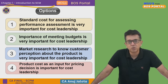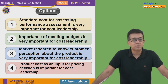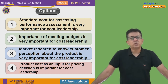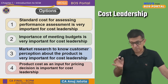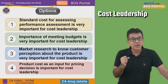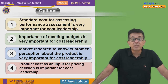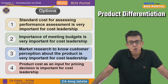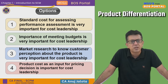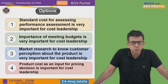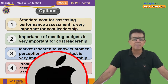Now let's come to the third one — market research to know customer perception about the product is very important for cost leadership. It might be slightly important but not very important. See, there are two types of strategies: cost leadership, where I sell a normal product at the cheapest possible price to capture the market, and product differentiation strategy, where your product is very differentiated compared to the competition — products that are far superior.